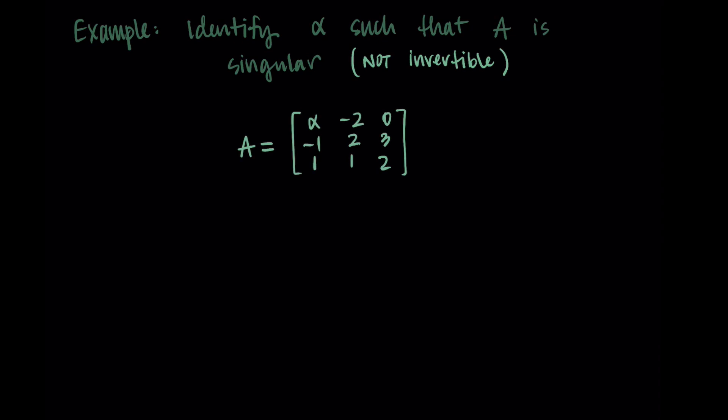So I'll give you a matrix A here, and it has one unknown value in it. So our first column is alpha, negative 1, 1. The second column is negative 2, 2, 1. And the third column is 0, 3, 2.